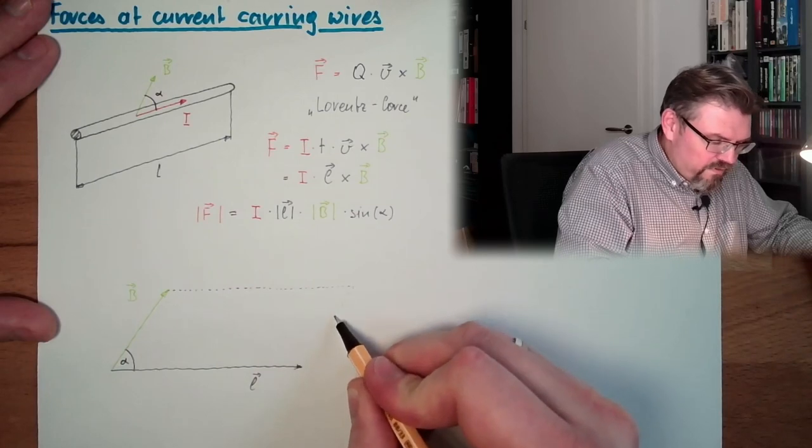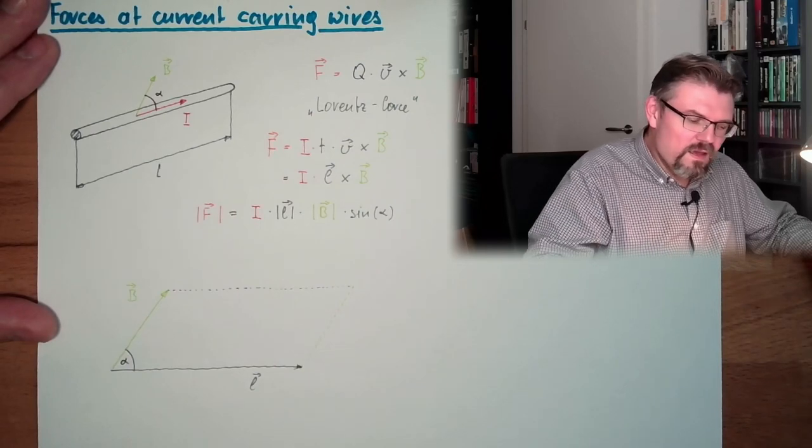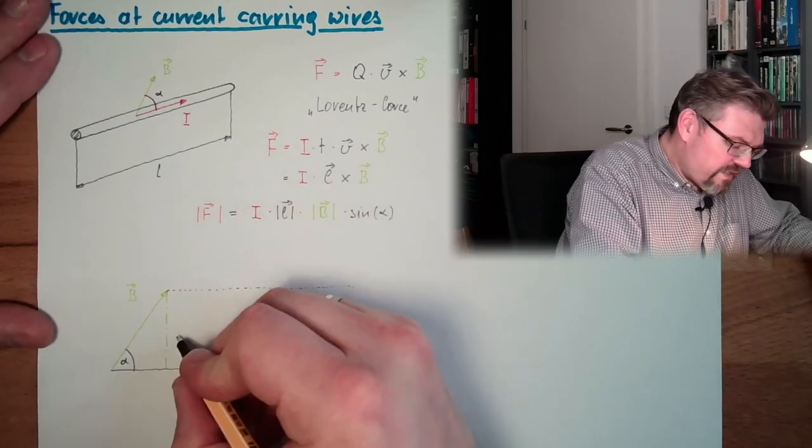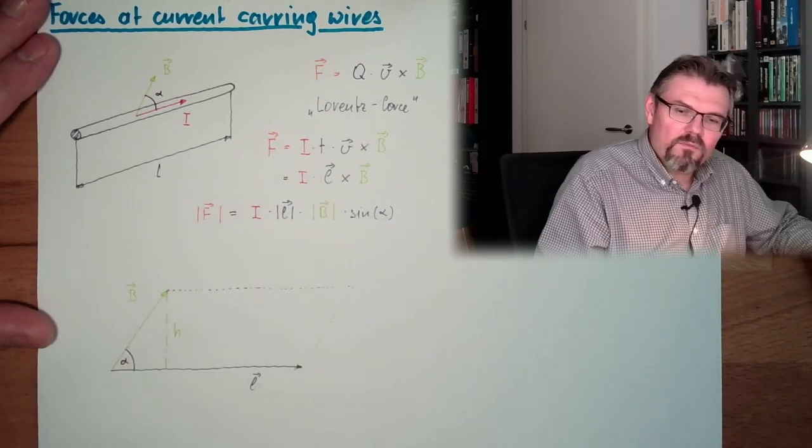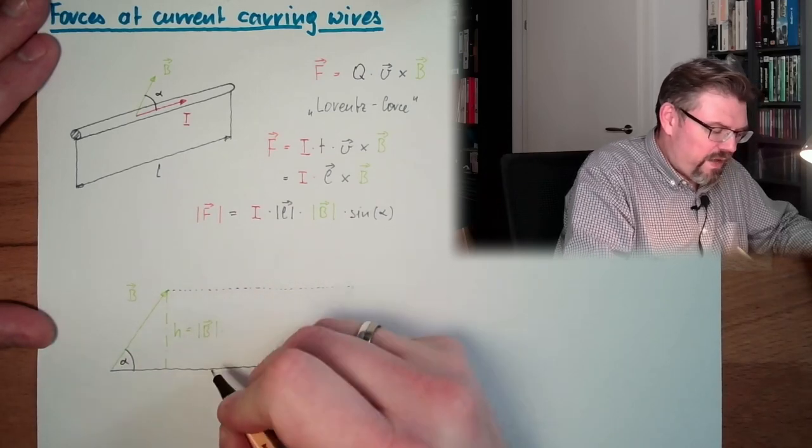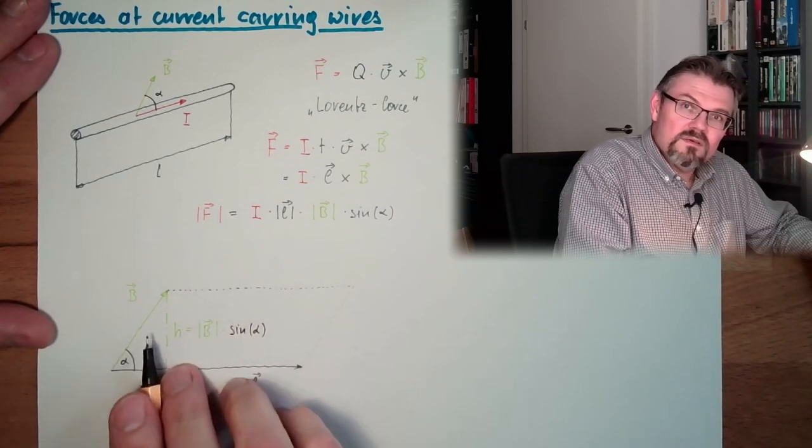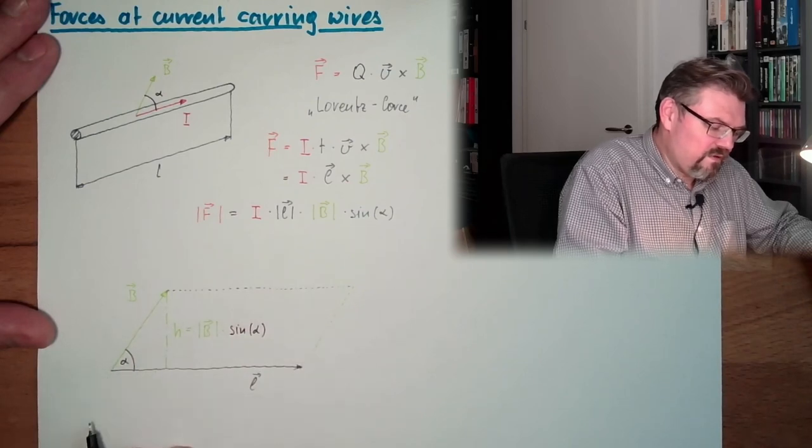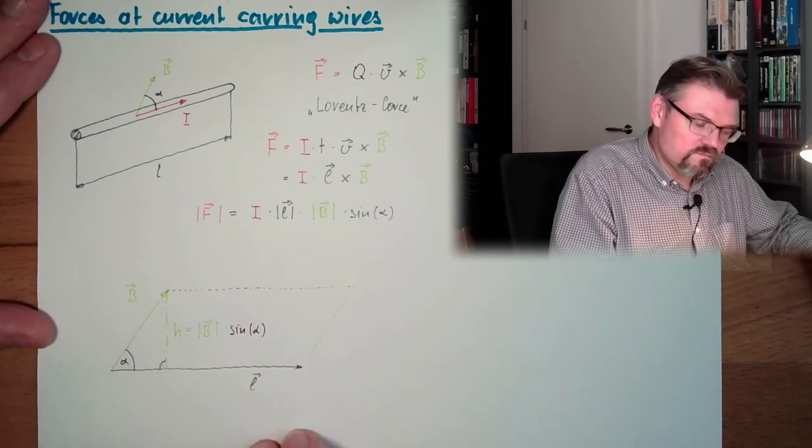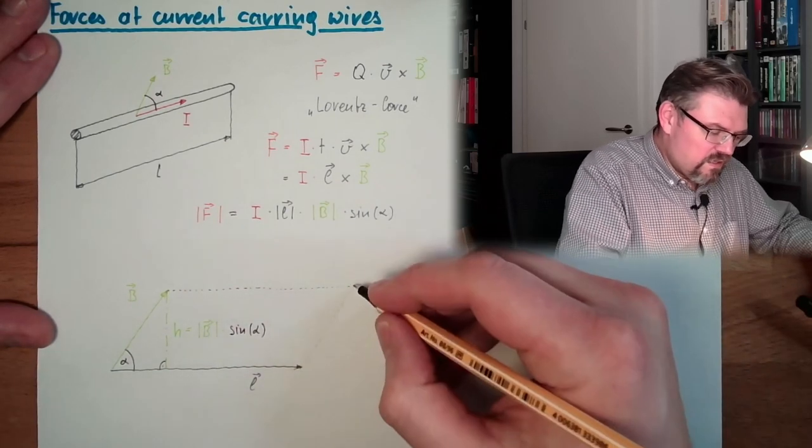This would be the parallelogram which is defined by those two. And now let's have a look at this length here. How much is this length? I call it h. Because it's the height of the parallelogram. This is the absolute value of B multiplied by sine alpha. Sine alpha. This divided by this is sine alpha. Because we have here a rectangular triangle.